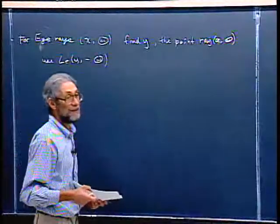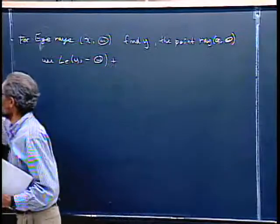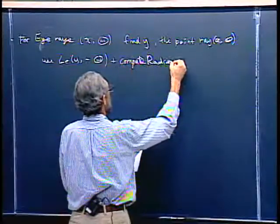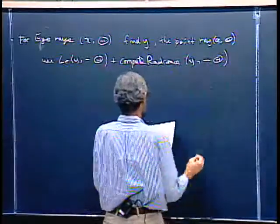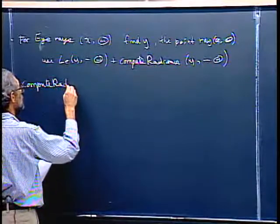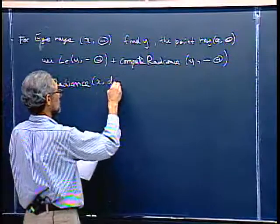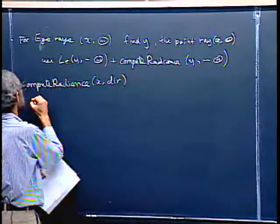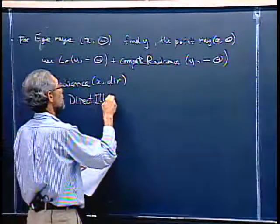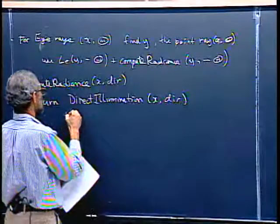We have to add on something that will get all the rest of these terms, and that's called compute_radiance. What I'm going to give now is the code for compute_radiance. That's going to have a recursive component and a direct component — compute_radiance(x, direction) is going to return direct_illumination(x, theta) plus indirect_illumination(x, theta).